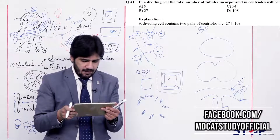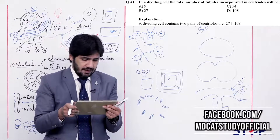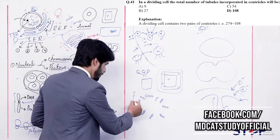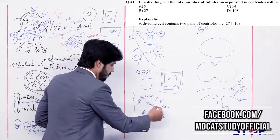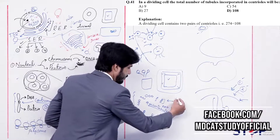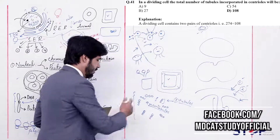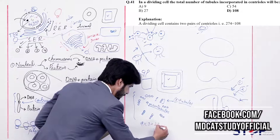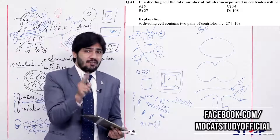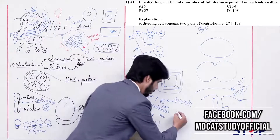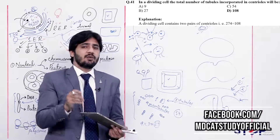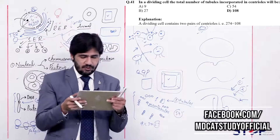Question 41: In a dividing cell, the total number of tubules incorporated into the centrioles will be (alpha) 9, (beta) 27, (charlie) 54, (delta) 108. One centriole has 9 microtubules and each has 3 tubules: 9 × 3 = 27 tubules per centriole. A non-dividing cell has 2 centrioles: 27 + 27 = 54. When the cell divides, centrioles duplicate to 4: 54 + 54 = 108. So the right answer is delta — 108.